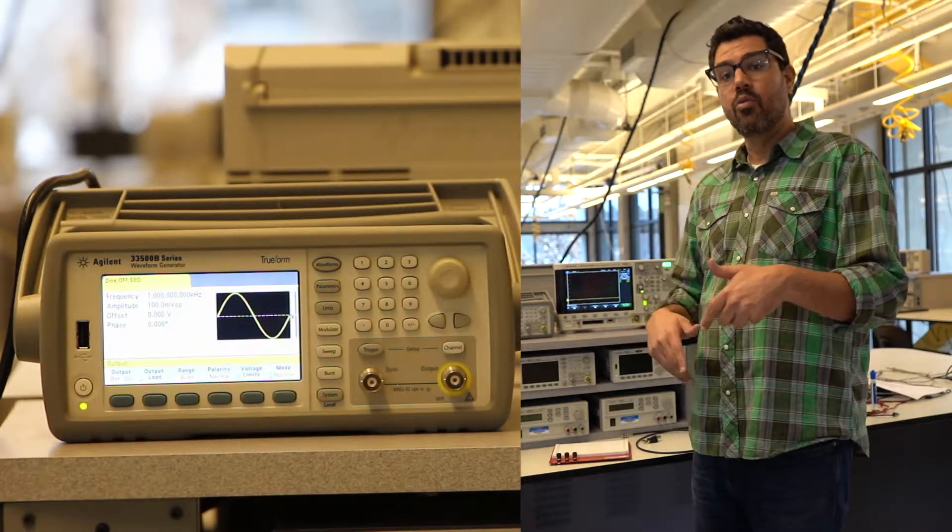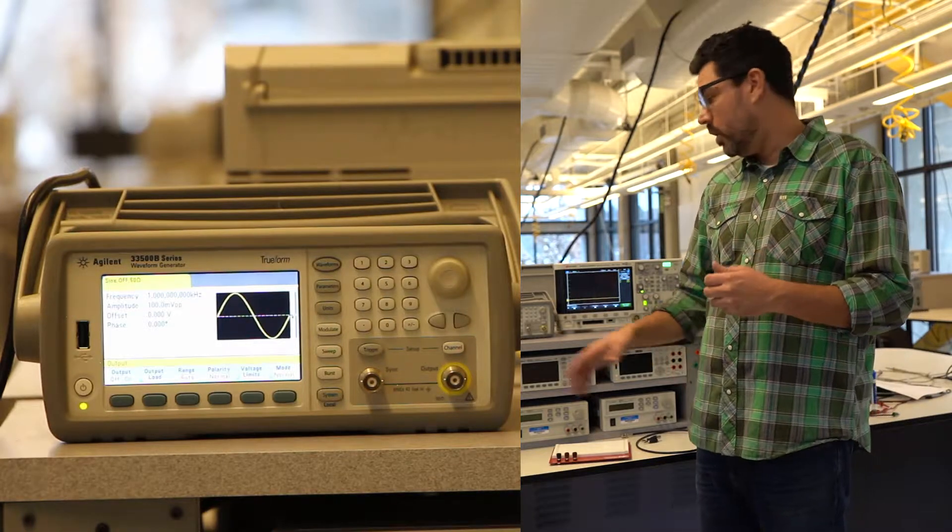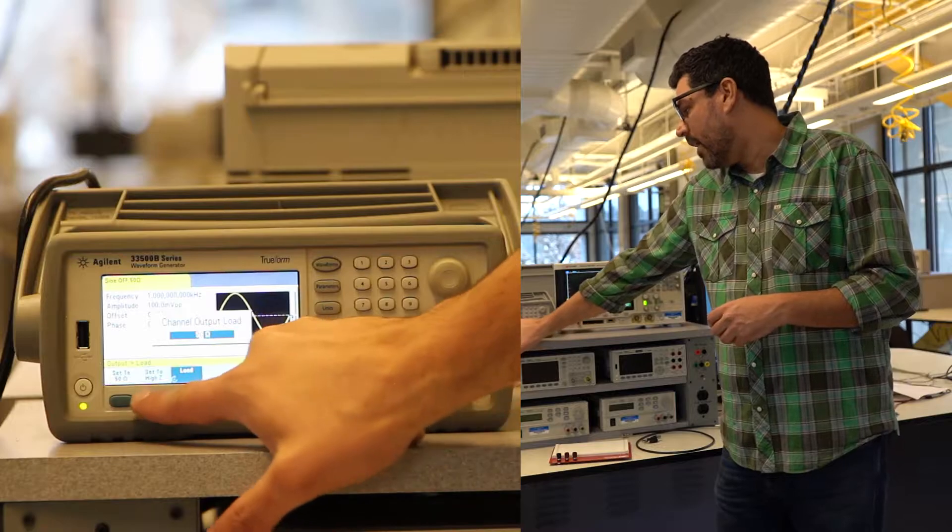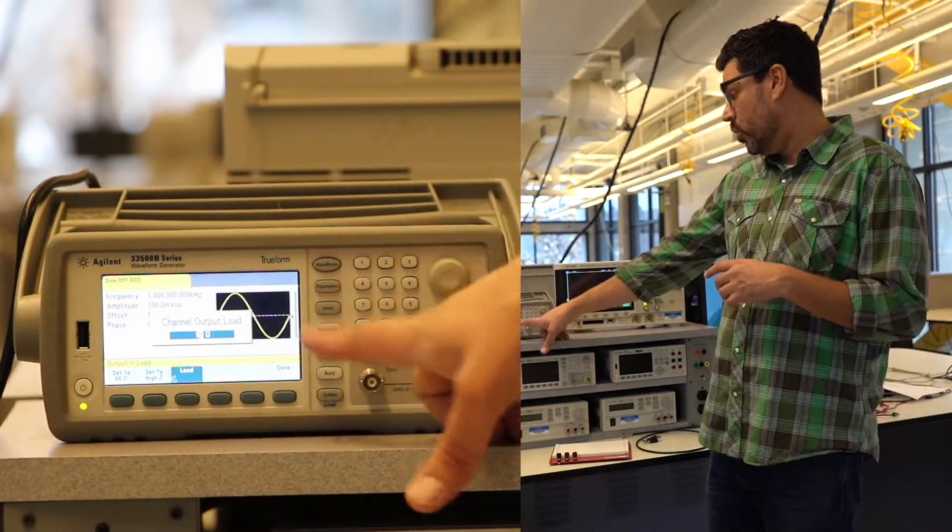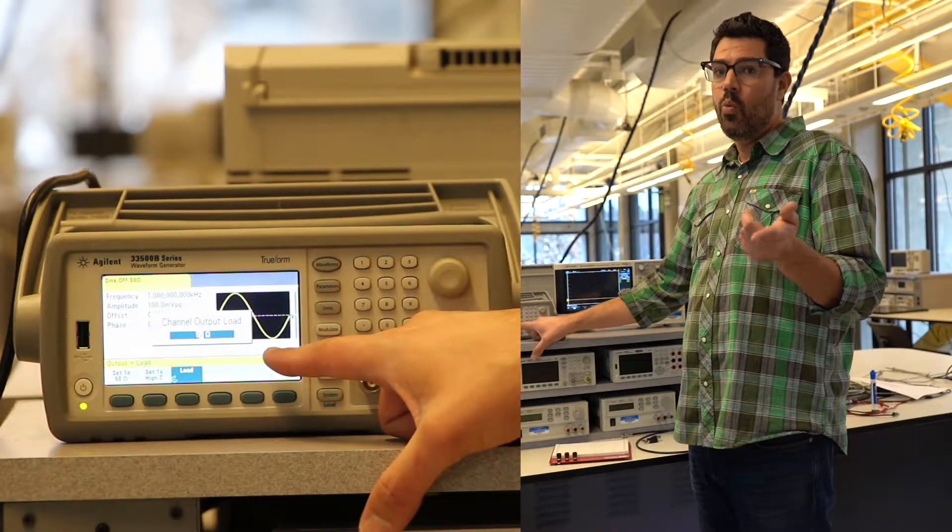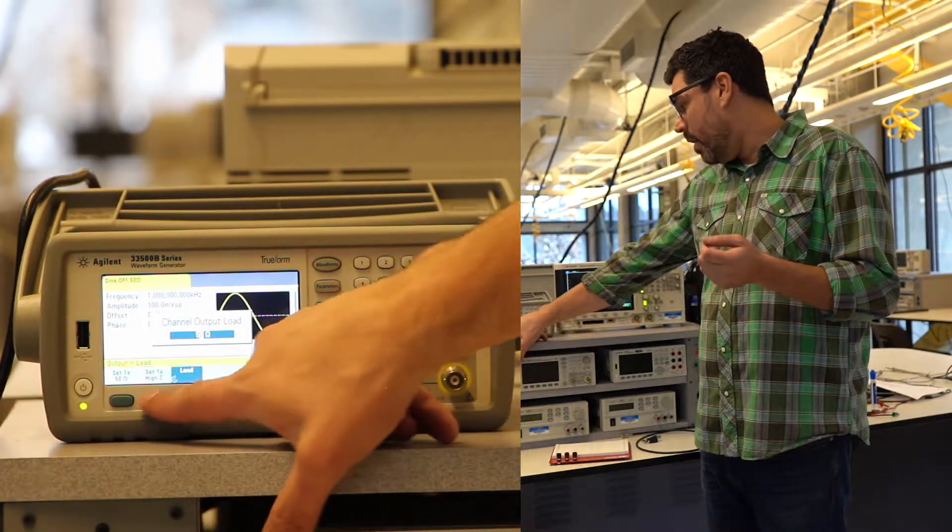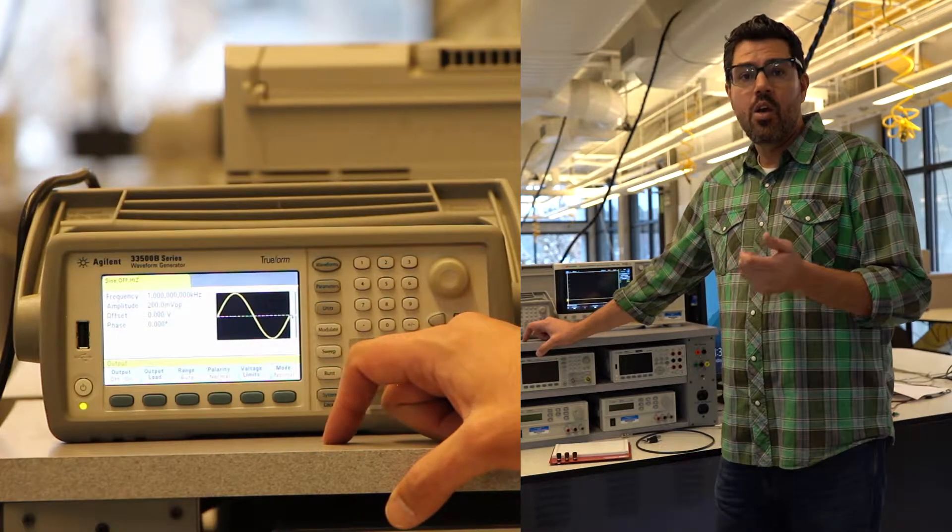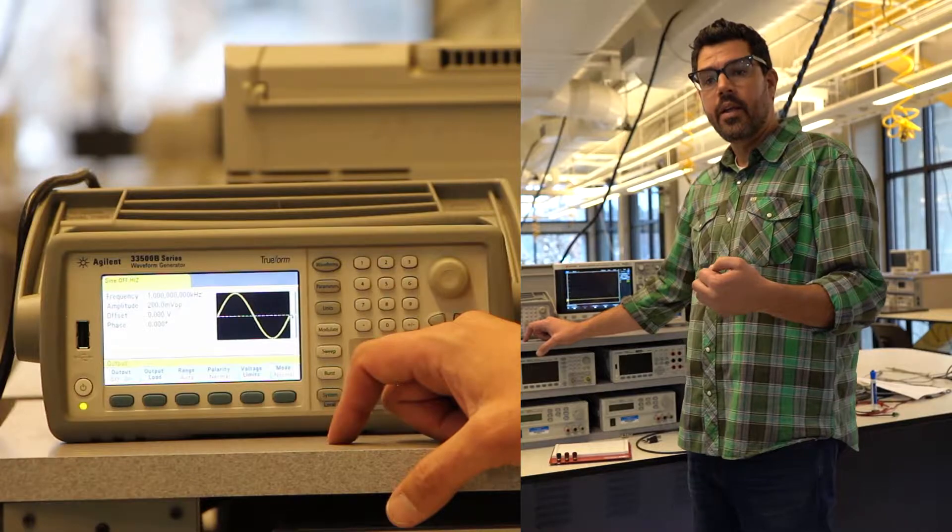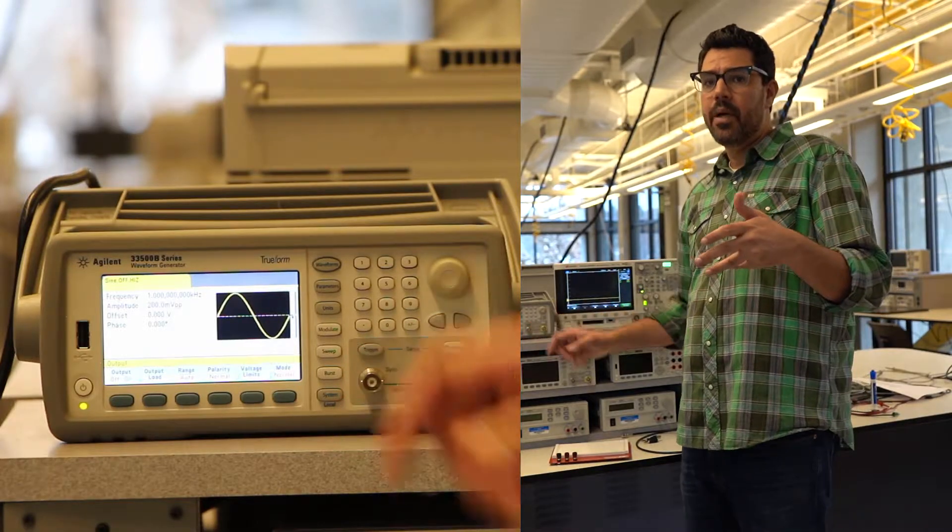Now the other really important function is the output load. So output load, I've got two options. I've got 50 ohm option, which is usually the factory reset. That's not the one we want. We want high Z, where Z stands for high impedance. Let me talk a little bit about the 50 ohm and the high Z on the whiteboard.